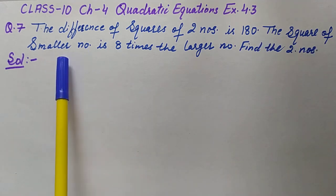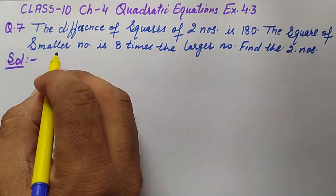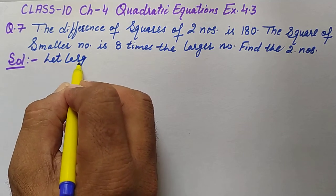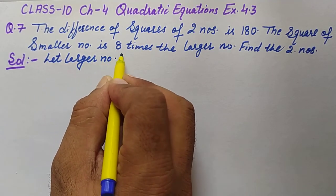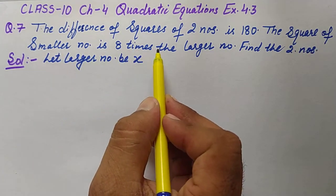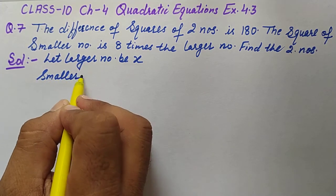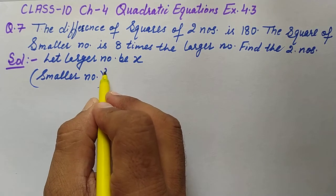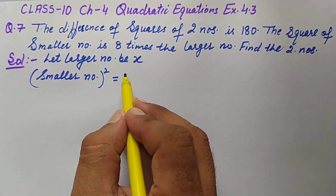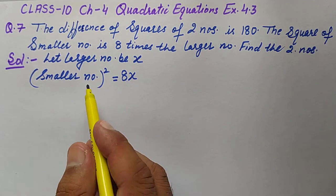We'll start from the second condition: the square of the smaller number is eight times the larger number. Let the larger number be x. Then, smaller number squared equals eight times the larger number, so smaller number squared equals 8x.